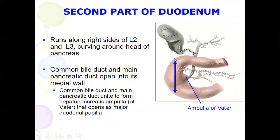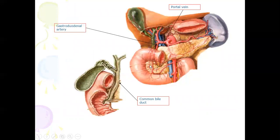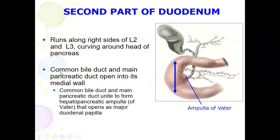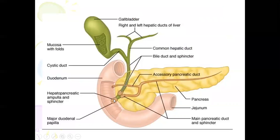The second part of the duodenum runs along the right side from L2 to L3, curving around the head of the pancreas. The common bile duct opens into its medial wall. The common bile duct and the main pancreatic duct unite to form the hepatopancreatic ampulla — the ampulla of Vater — which opens as the major duodenal papilla.